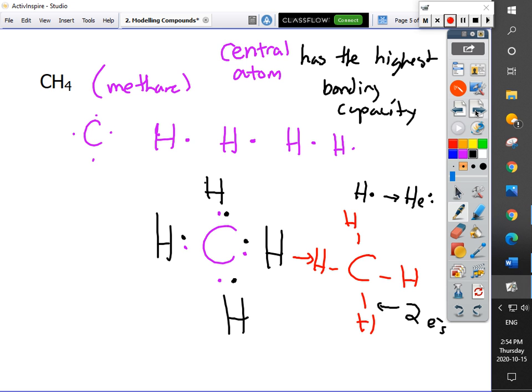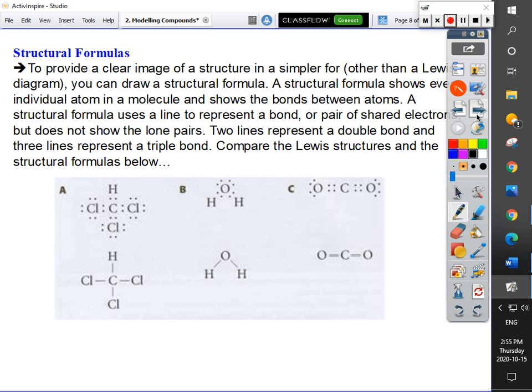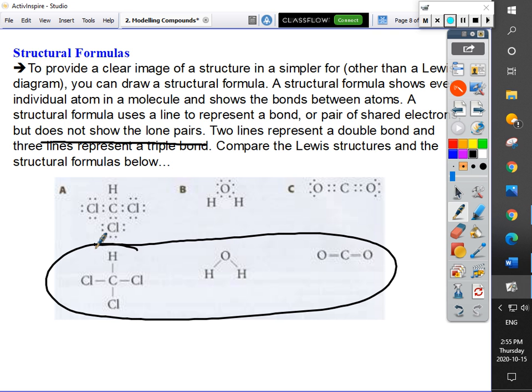So that's called a structural formula. One thing to keep in mind when we look at these structural formulas: when we look at the structural formula, every shared pair of electrons is represented as a tick. Now, the thing that is not drawn though are lone pairs. And that's important to note because we are going to have to know that they're there later on. So it's a lot simpler. It doesn't show us the lone pairs that are there, even though they are. And we have to remember that they are still there.